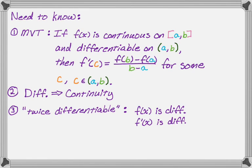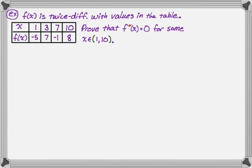So let's see what the problem says. We have f(x) is twice differentiable, with values in the table. I constructed this table — we've got x values of 1, 3, 7, and 10, so they're not even intervals, make sure you keep that in mind. And the y values are negative five, seven, negative one, and eight. What we want to do is prove that f''(x) equals zero for some x on the interval from one to ten.